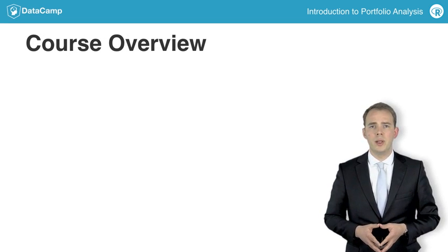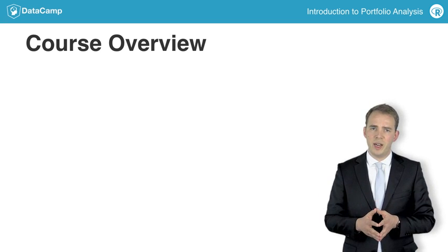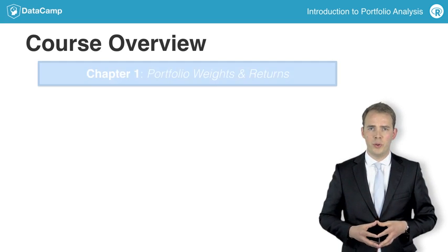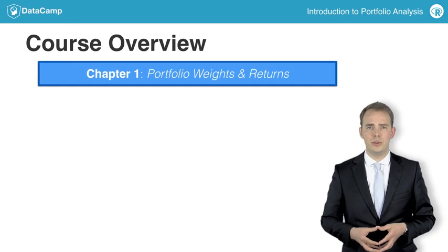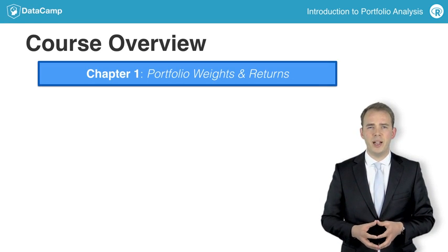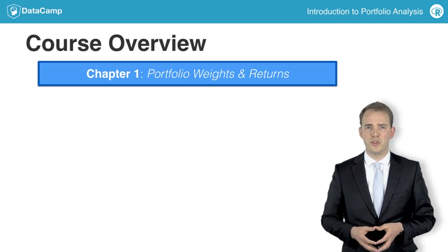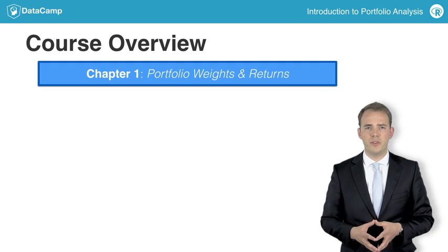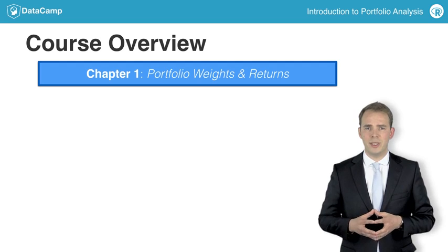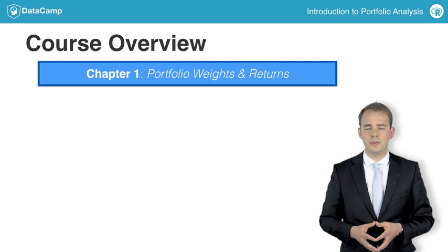The course proceeds in four chapters. In chapter 1, I will introduce the basic variables in portfolio analysis, namely the portfolio weights and the portfolio returns. The portfolio weights tell you the percentage of total value invested in each of the assets. The portfolio returns measure the relative increase in portfolio value over the period. I will show you how the portfolio weights and returns are connected and how to do the calculation.